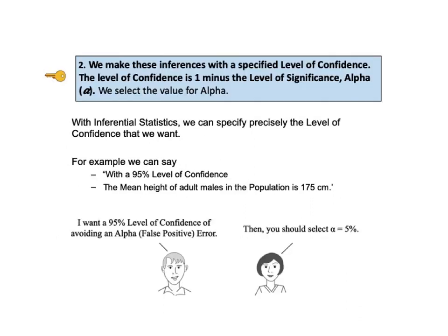Key to understanding number 2 says: we make these inferences with a specified level of confidence. The level of confidence is 1 minus the level of significance, alpha. We select the value for alpha. We can never be 100% certain about an estimate, but inferential statistics enables us to get close to that. The most common level of confidence is 95%, that is 0.95. In inferential statistics, we get to select the level of confidence — but what exactly are we confident about when we say we want a certain level of confidence?